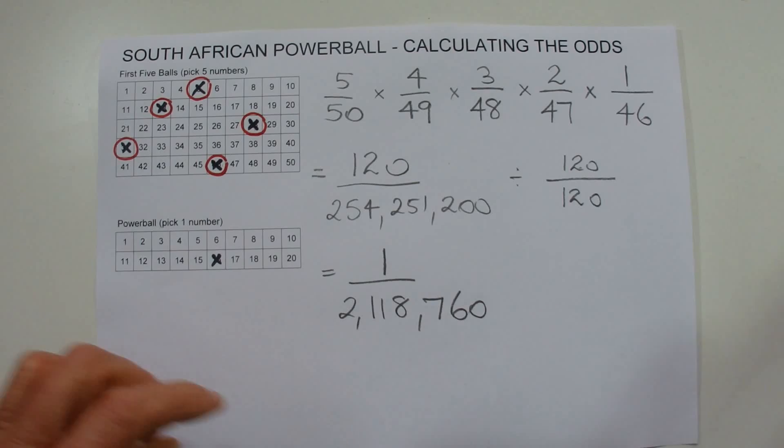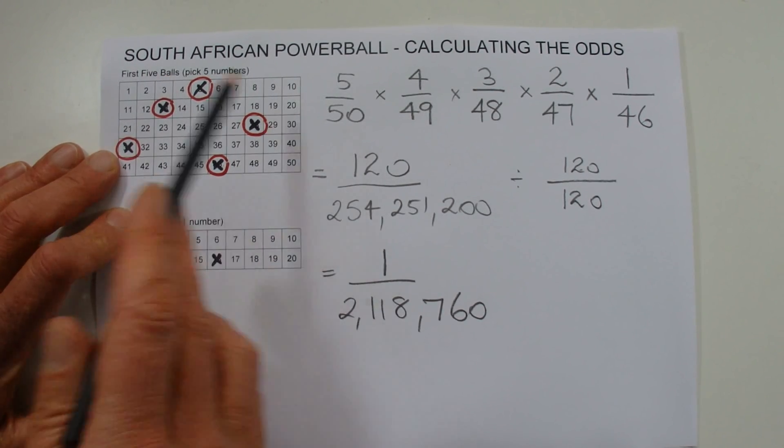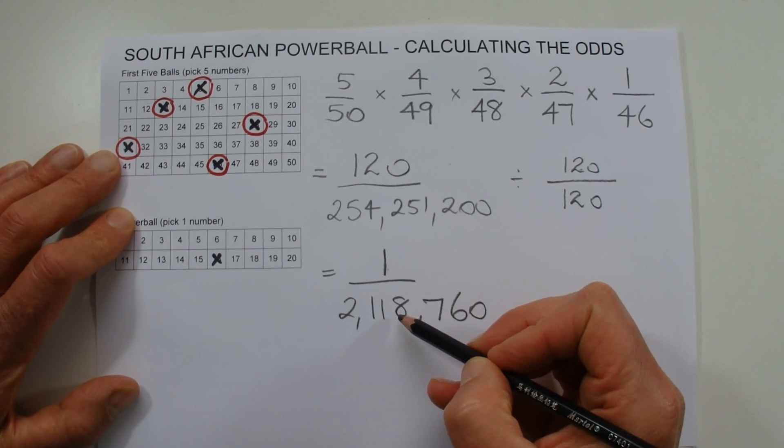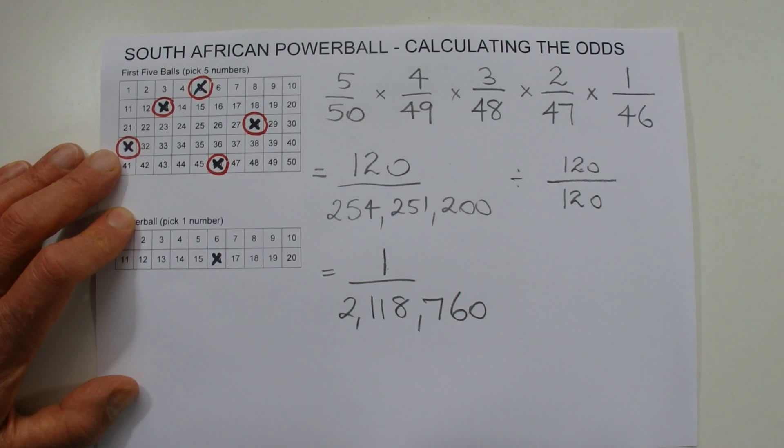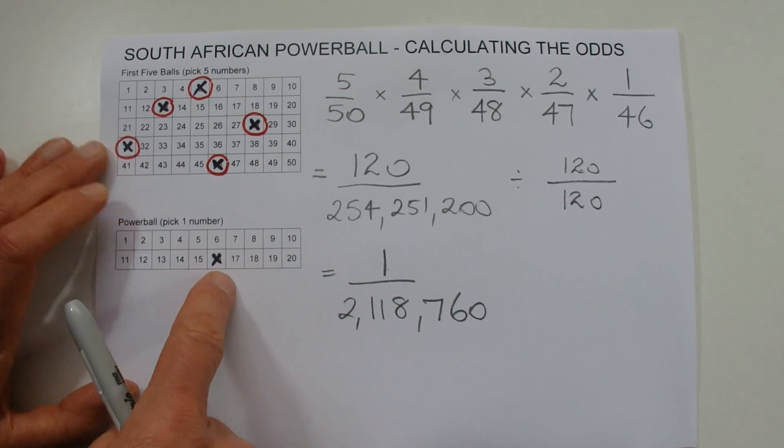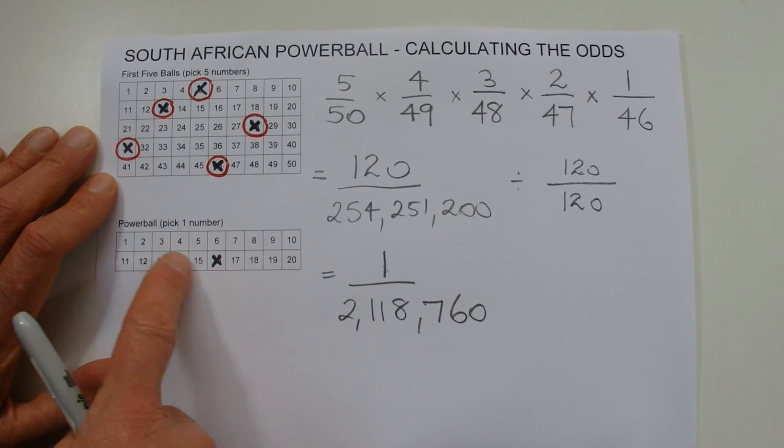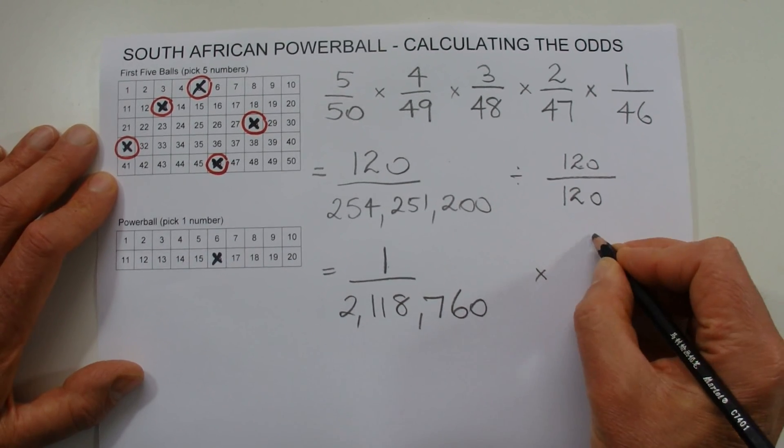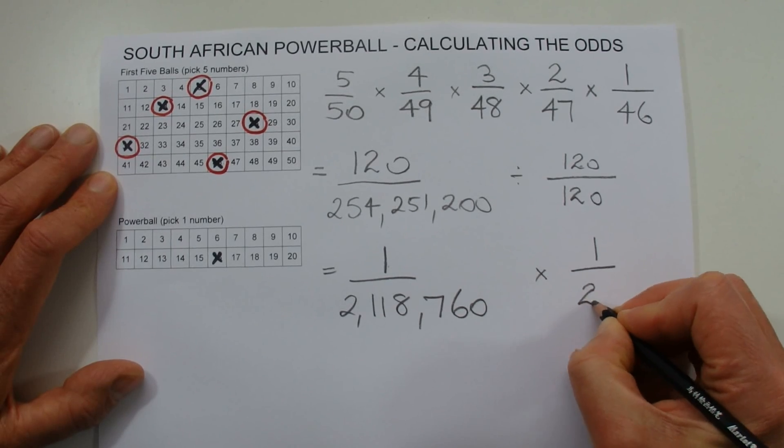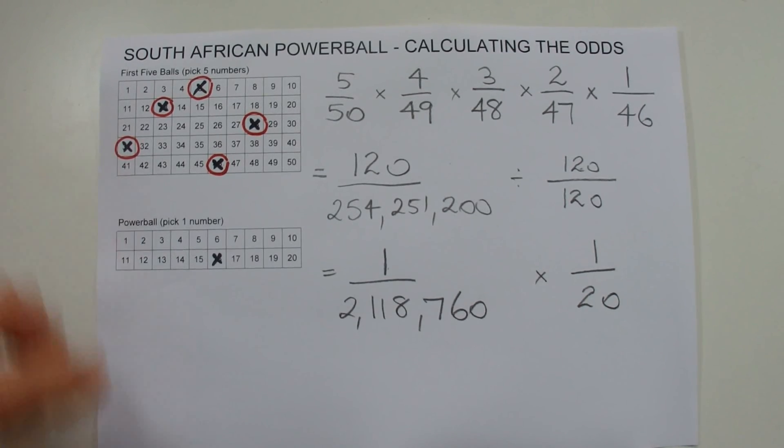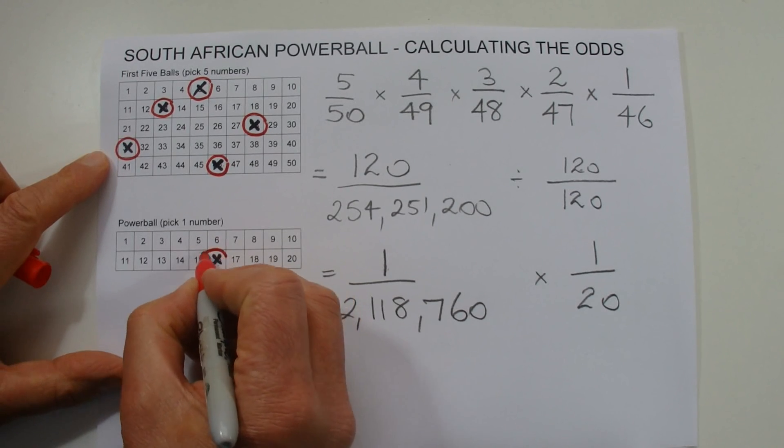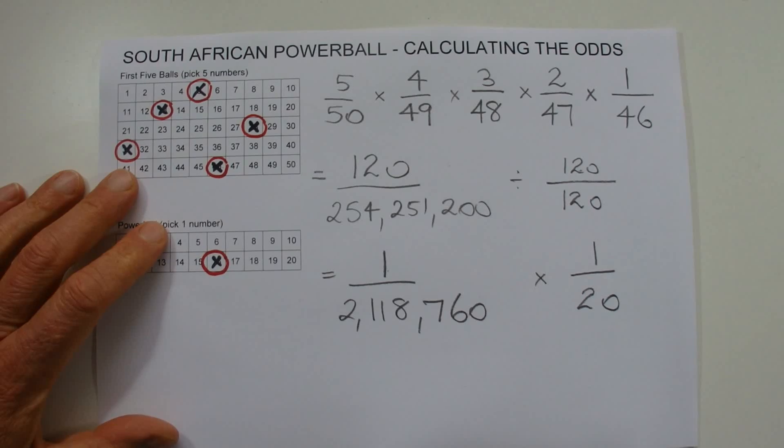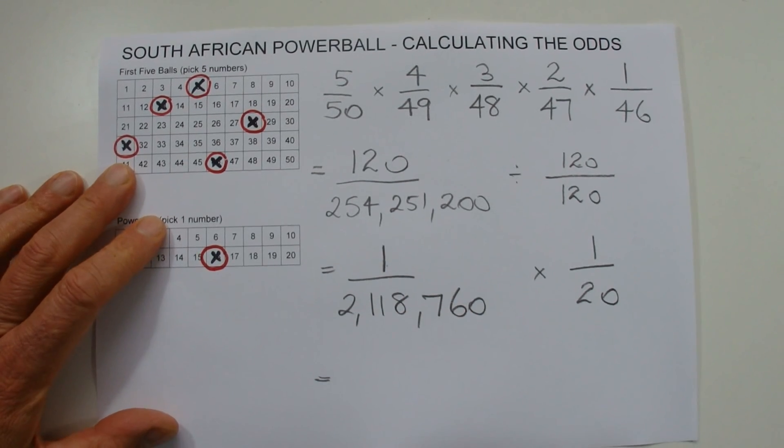So there we go, that's not quite finished yet. That's the chance then of picking those first five numbers, you've got one chance in 2,118,760. But then you also have to match the Powerball number, and you've got one chance in 20 to correctly match that Powerball number. And if you do, then you win first prize in the South African Powerball.